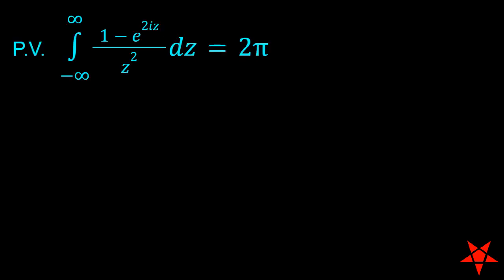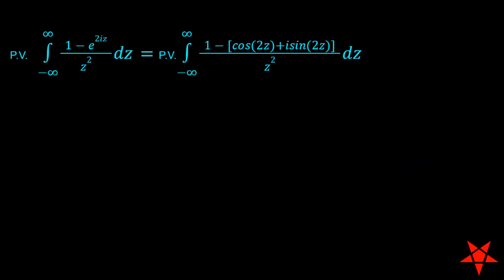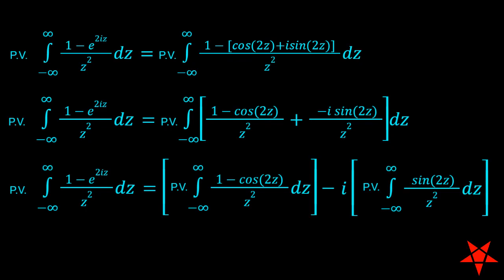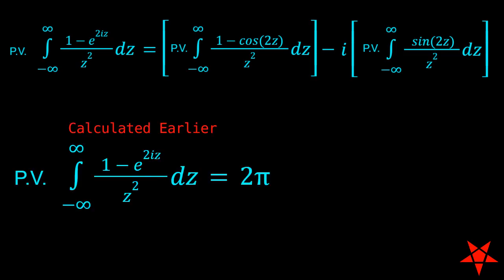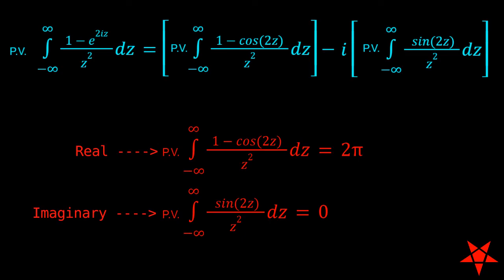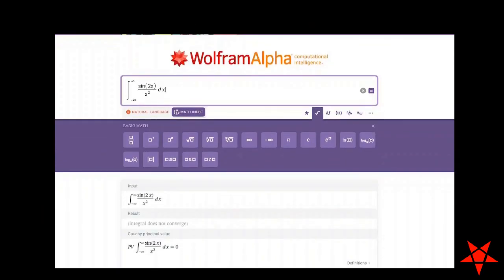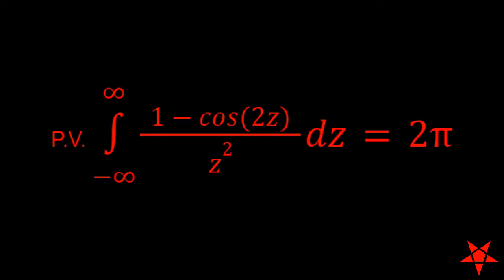I mentioned distributive property because we're about to break this integral into pieces. Euler's relation allows us to expand e to the 2yz into cosine of 2z plus i sine of 2z. Taking the principal value of the expanded version of f of z on the right, we now have the opportunity to separate the integral into two parts. This allows us to break the original principal value into real and imaginary components. Taking another look at what we calculated earlier for the original principal value, we can see that there is no imaginary component. Thus, we can show that the second principal value on the right is zero and the real component equals 2 pi. If you have any reservations about the imaginary component of the original principal value, then Wolfram Alpha is your friend and it seems to confirm our results. As for the real component, if we factor out a 2, we now have a trigonometric identity for sine squared of z.